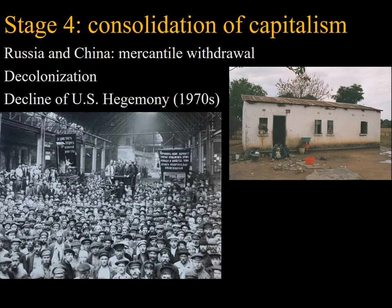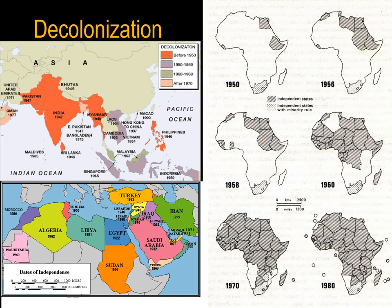In stage 4, the consolidation of industrial capitalism brought further changes in the mode of production and the consequent erosion of colonialism. The three main areas of decolonization were South Asia, Southeast Asia, the Middle East, and Africa.